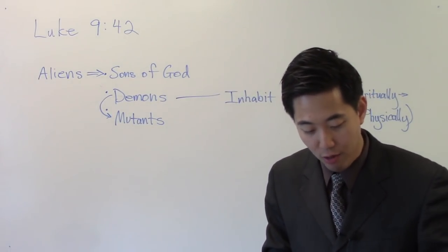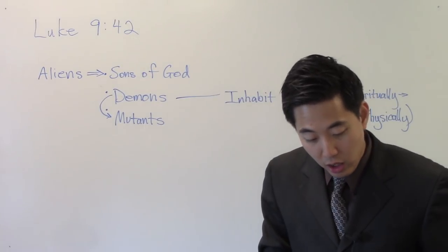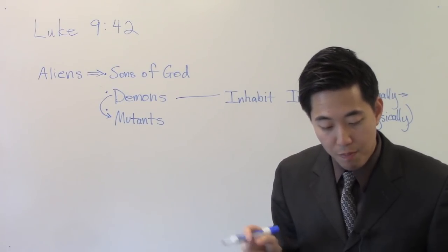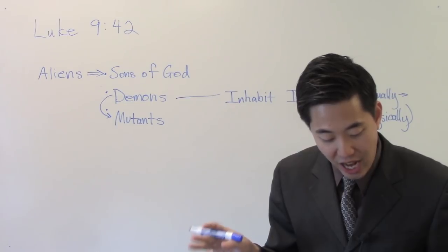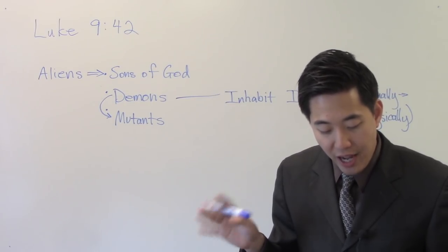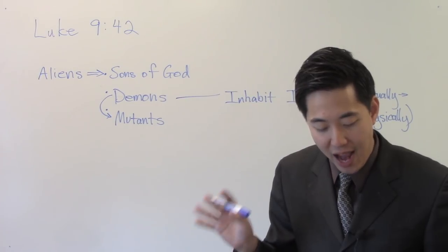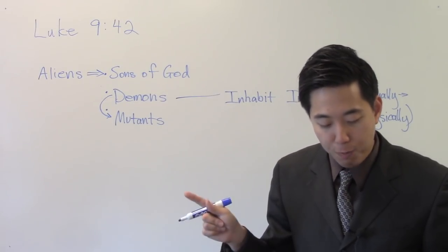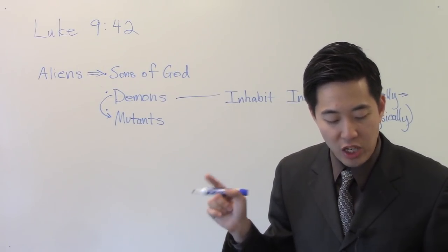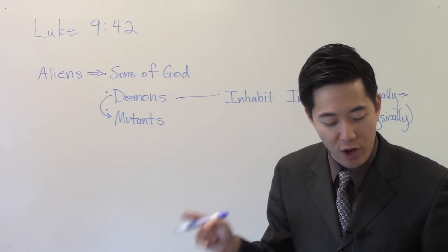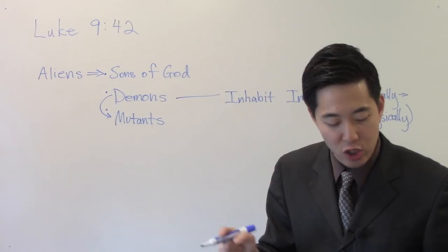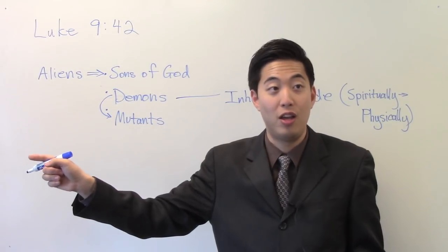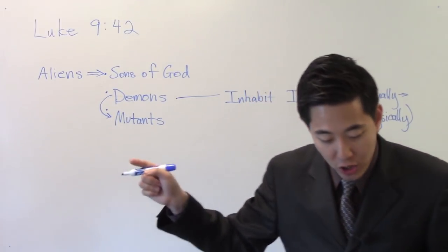Look at verse 5. 1 Corinthians 5:5. To deliver such an one, but who is this person? He's actually a saved person. Look at verse 11. But now I have written unto you not to keep company, if any man that is called a brother be a fornicator. This brother is a fornicator. Look at 1 Corinthians 5:1. It is reported commonly that there is fornication among you, and such fornication as is not so much as named among the Gentiles, that one should have his father's wife. There is this particular brother that committed such fornication in the church.